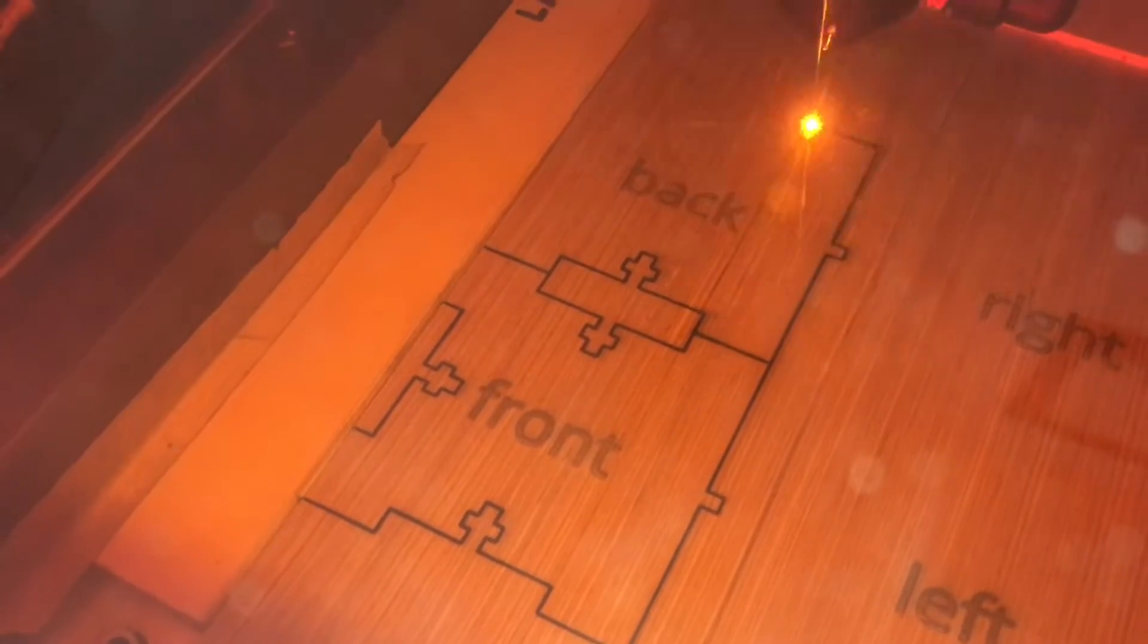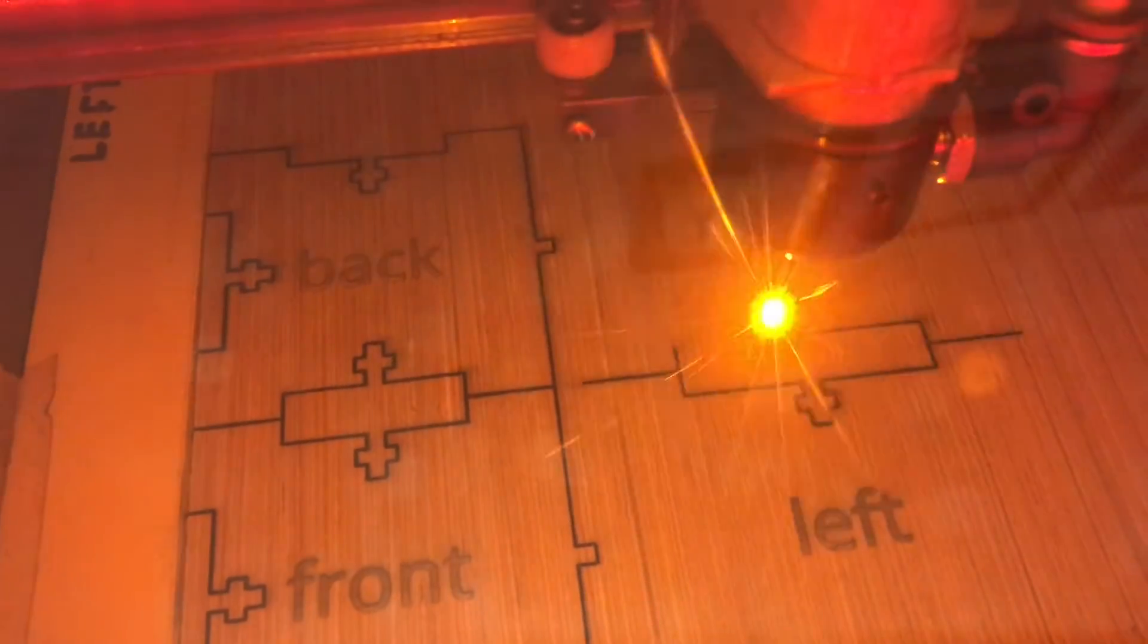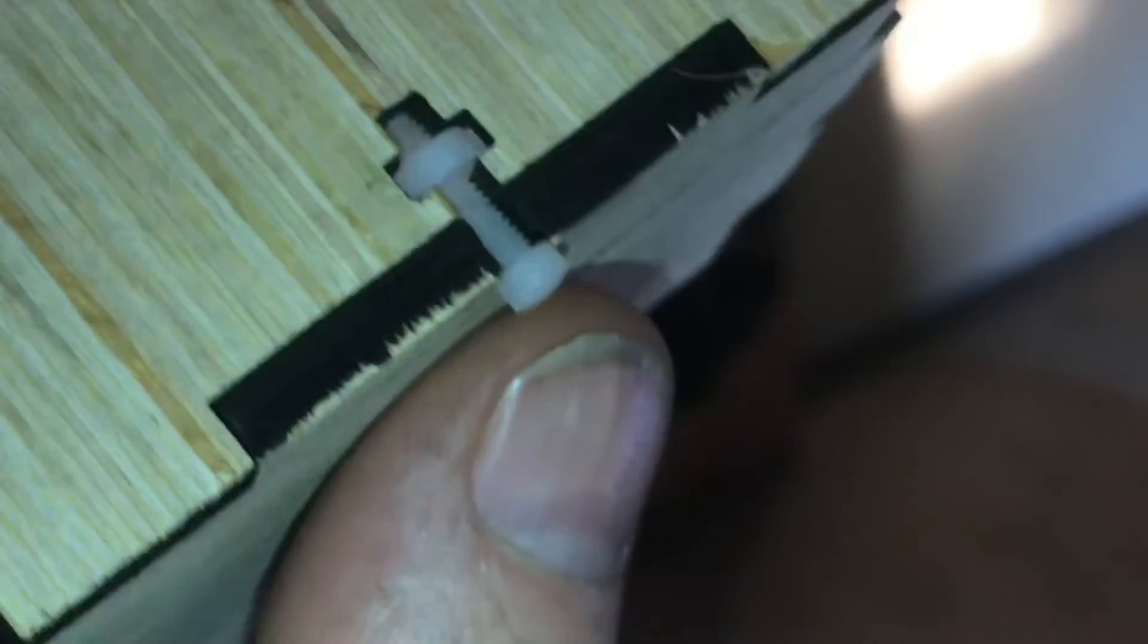Now you'll notice that it's cutting out these T-slots. That way you can actually use nuts and bolts to put this box together.